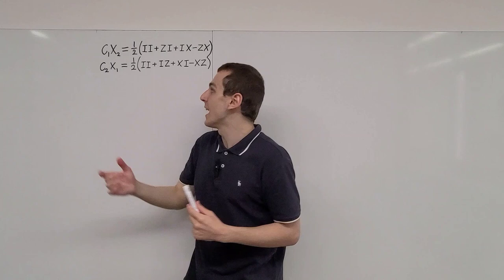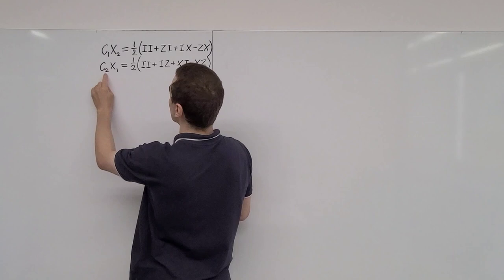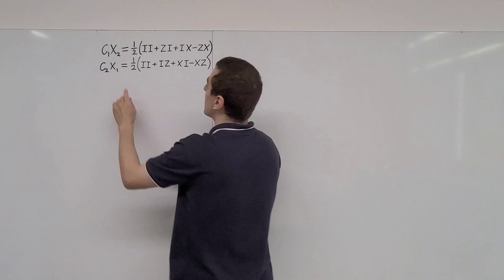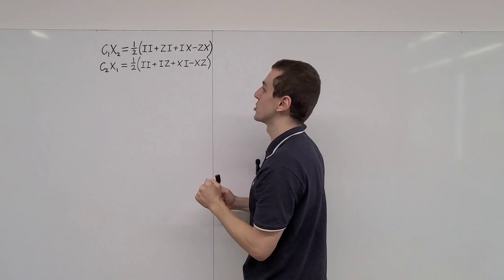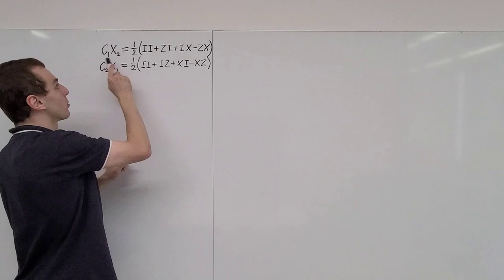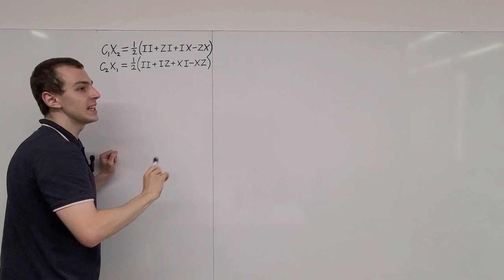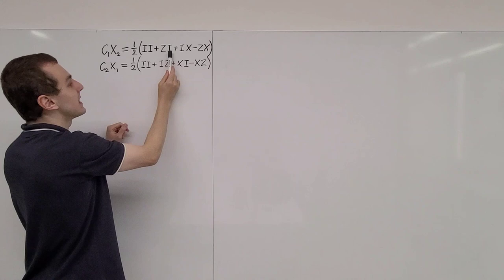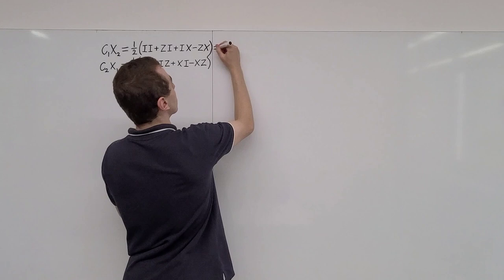We're dealing with a two-qubit system, and this is a unitary operator acting on that system. In C2X1, qubit 2 is the control and qubit 1 is the target. In a quantum circuit diagram, these are just flipped around. Now let's rewrite the C1X2 expression in a slightly different form. We can see that the identity and X terms on the right can be factored out because these are tensor products. Grouping the first two terms and the last two terms, we get (I + Z)/2 on qubit 1, tensor product with identity, plus (I − Z)/2 on qubit 1, tensor product with Pauli X.